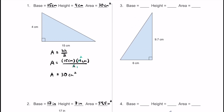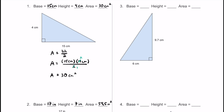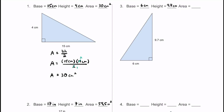Here's number 3. The base is 6 centimeters across the bottom. For the height, it has to be perpendicular to the base — that's this measurement going from the top to the bottom, and we know it is the height because it's 90 degrees — so that's going to be 9.7 centimeters. We don't know the area, so let's solve it using area equals base times height divided by 2.